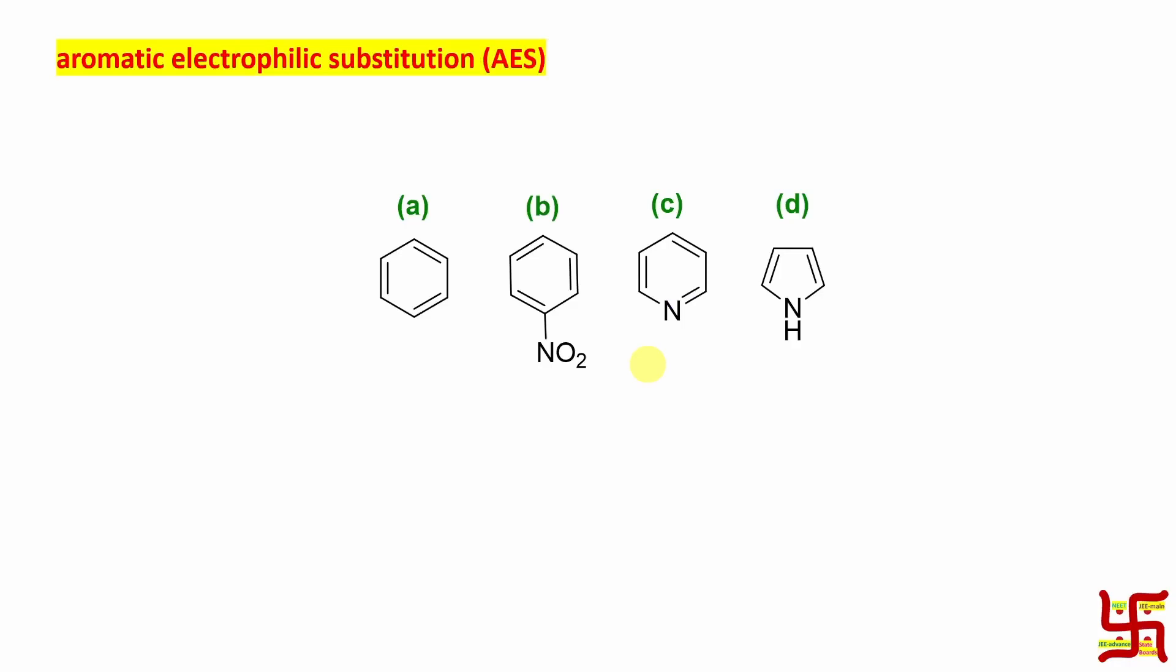Now, benzene is actually considered as the reference when we consider any compounds aromatic electrophile. So, this is reference. Now, if you look at NO2, what is the nature of this NO2? This NO2 is electron withdrawing group. If I draw a canonical form, actually NO2 structure is this one. Nitrogen is carrying plus and oxygen carrying minus. Do not get confused. Do not put a double bond here. Both double bond. Nitrogen cannot be pentavalent.